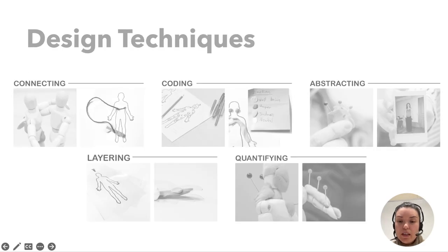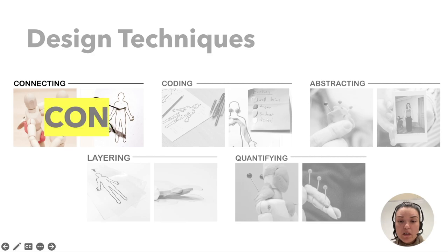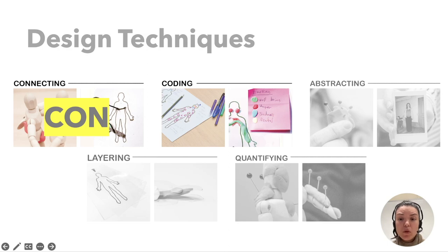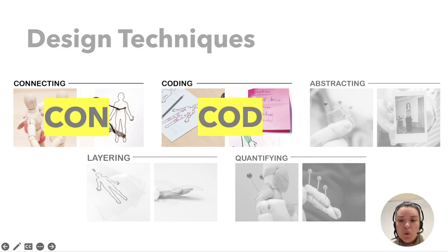The five design techniques that we identified are: connecting, coding, abstracting, layering, and quantifying. The first one, connecting, helped to portray relations between causes and effects, or relations between body parts — annotated as CON in the paper. Participants also used specific symbols, icons, words, and colors to code and distinguish different sensations and emotions, for which we use the term CODE.